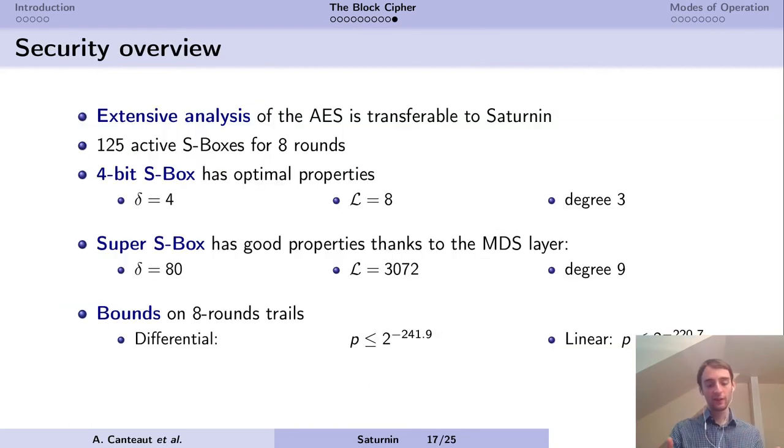Most of the security analysis of the AES that has been performed is transferable to Saturnin. We also have wide-trail arguments that apply very nicely. We have 125 active S-boxes for 8 rounds. The 4-bit S-boxes we use have optimal differential and linear properties. The Super S-Boxes have good properties that come from the MDS layer and the choice of small S-boxes. We can have bounds for differential and linear characteristics on 8-round trails.